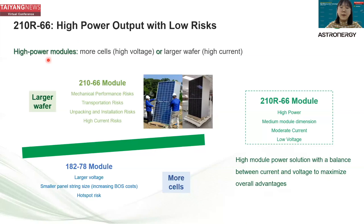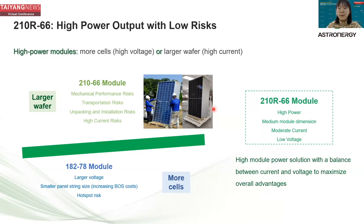We can improve module power output by having more cells or increasing the wafer area. A representative for larger wafer is the 266 module, which has a very large module area bringing mechanical performance risks. It also has to be packed in landscape portrait configuration with a high center of gravity, introducing risks of falling over during transportation, unpacking, and installation, as well as high current risks.